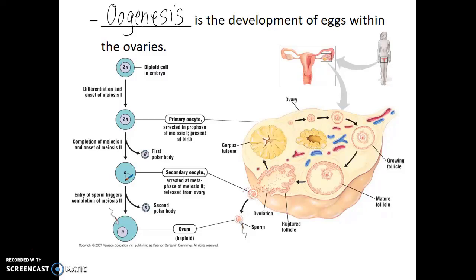The oocyte will only complete meiosis II if a sperm cell comes in contact with it. In the process of the sperm cell fertilizing the egg, the egg will quickly finish its second division of meiosis and then have a haploid nucleus. During these meiotic divisions, there will be an even division of the genetic material, but the cytoplasm will be divided very unevenly. After the first division, the primary oocyte will be divided into a secondary oocyte — a very large cell containing most of the cytoplasm — and a polar body, which will have very little cytoplasm and play no further role in development. A second polar body will be produced at the end of meiosis II, provided there was fertilization, and likewise plays no further role in development.